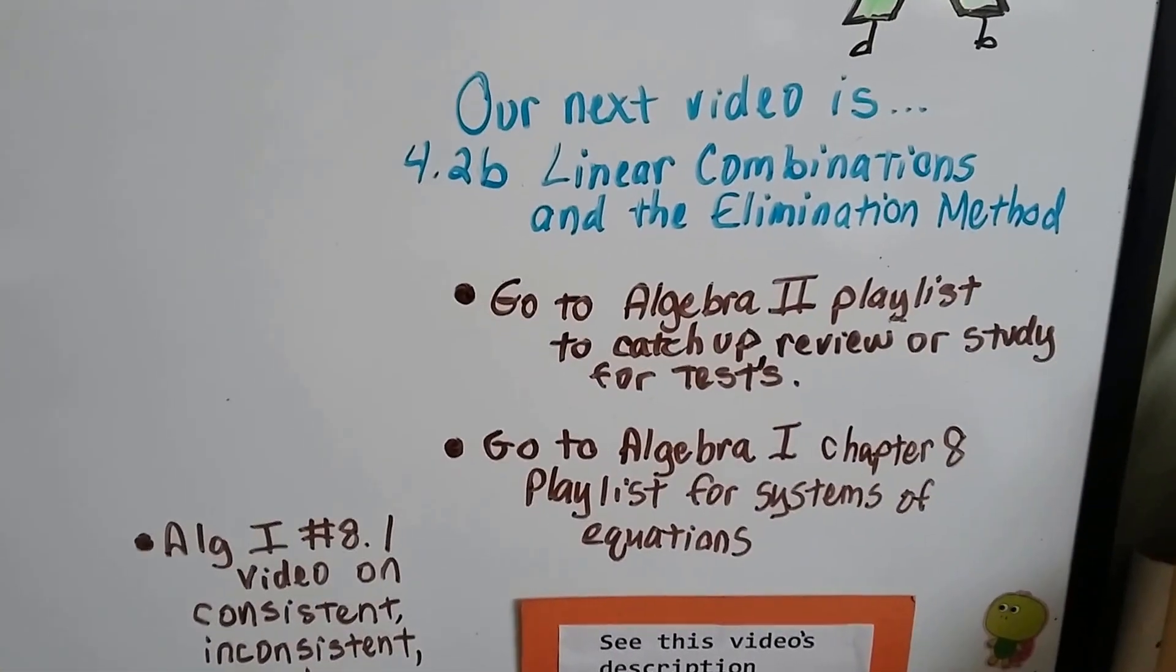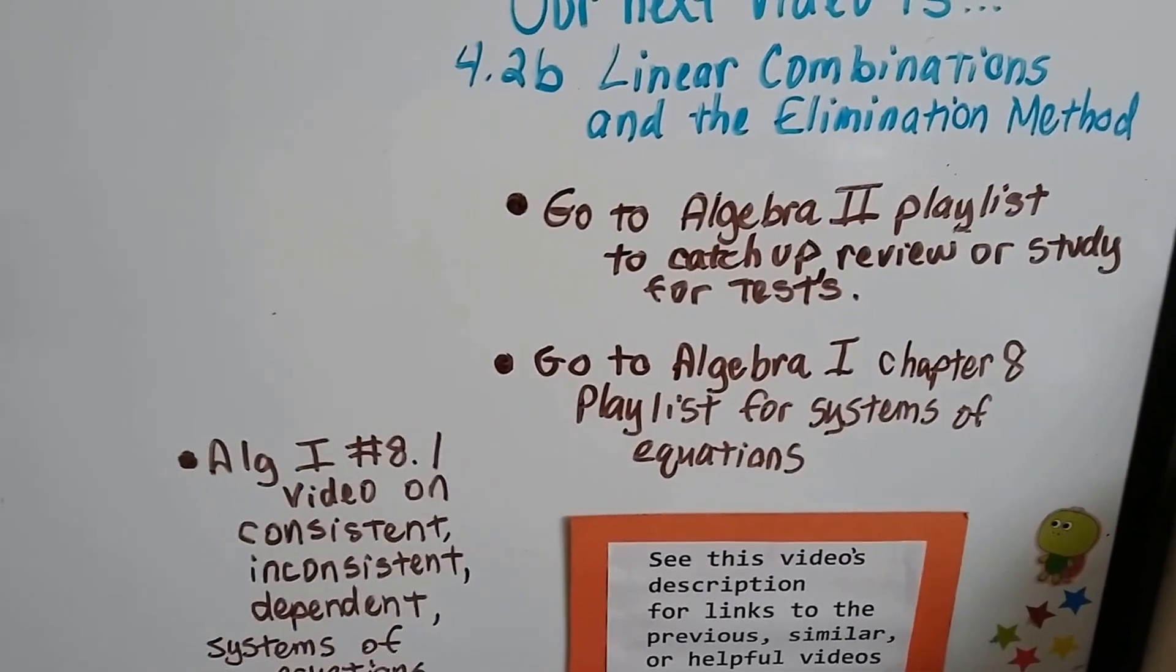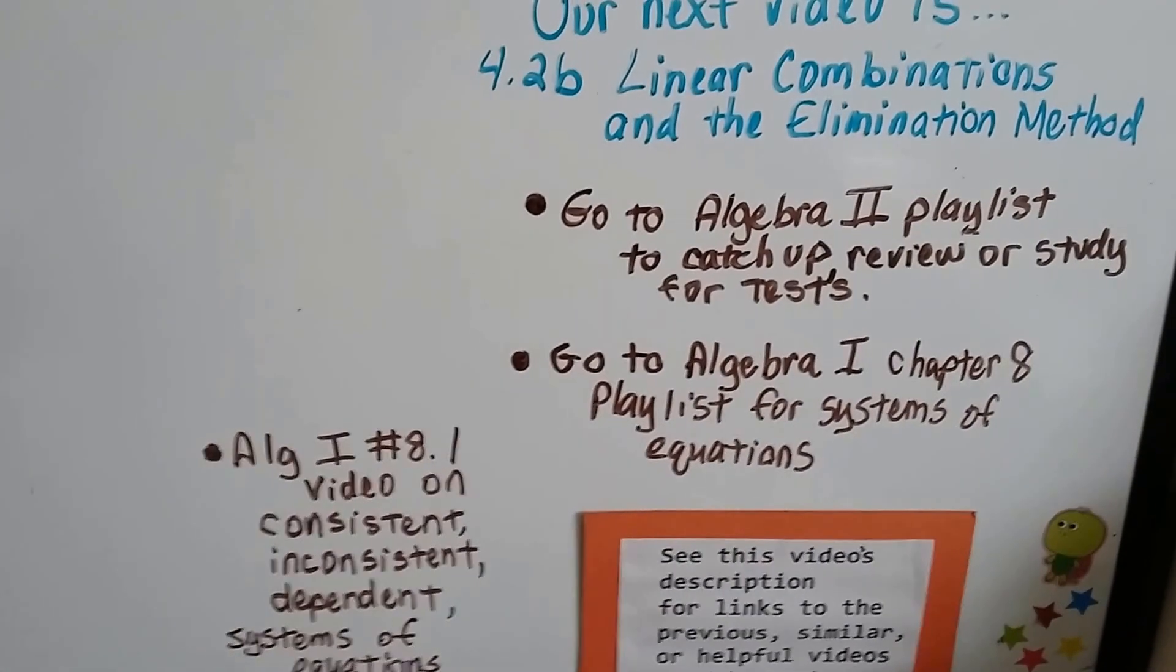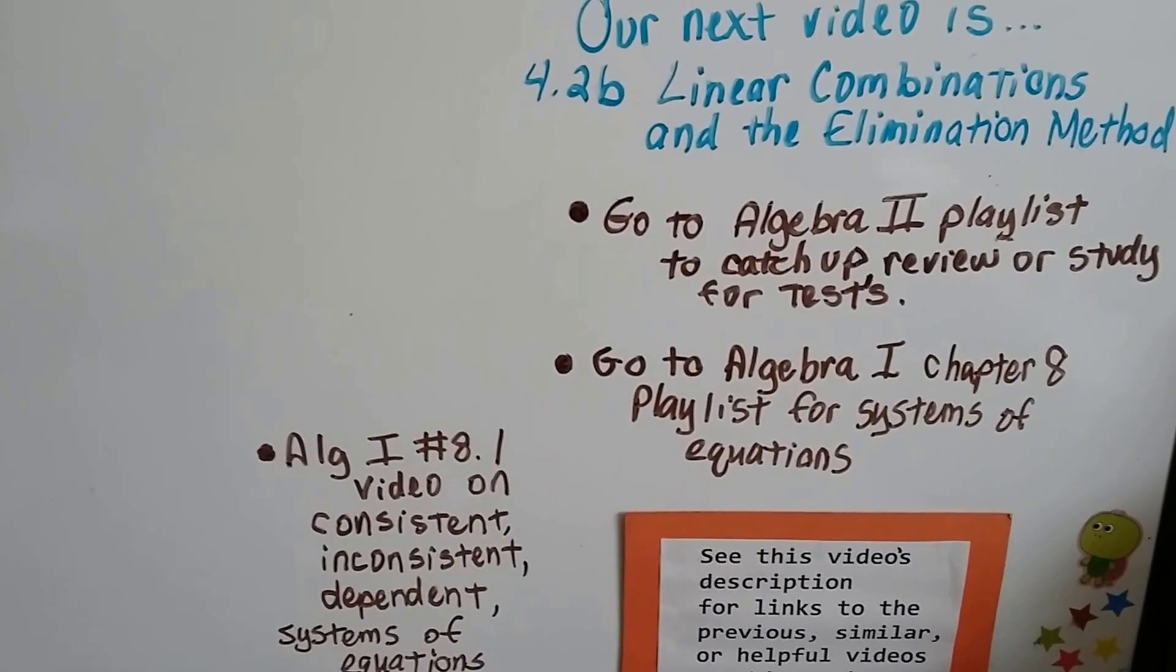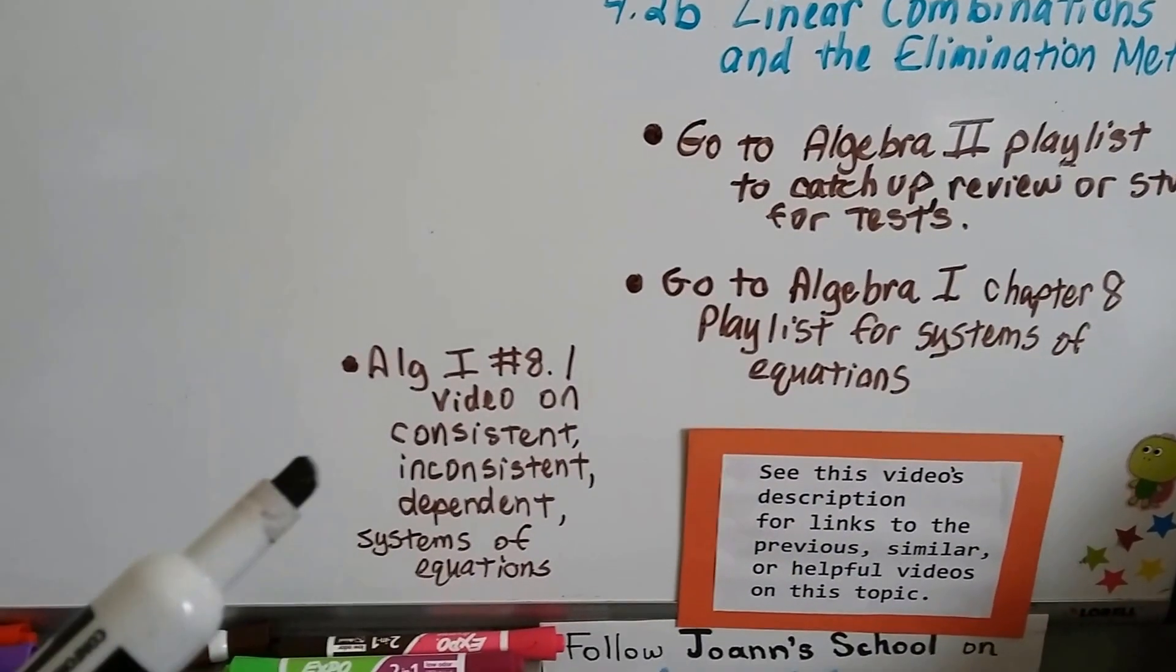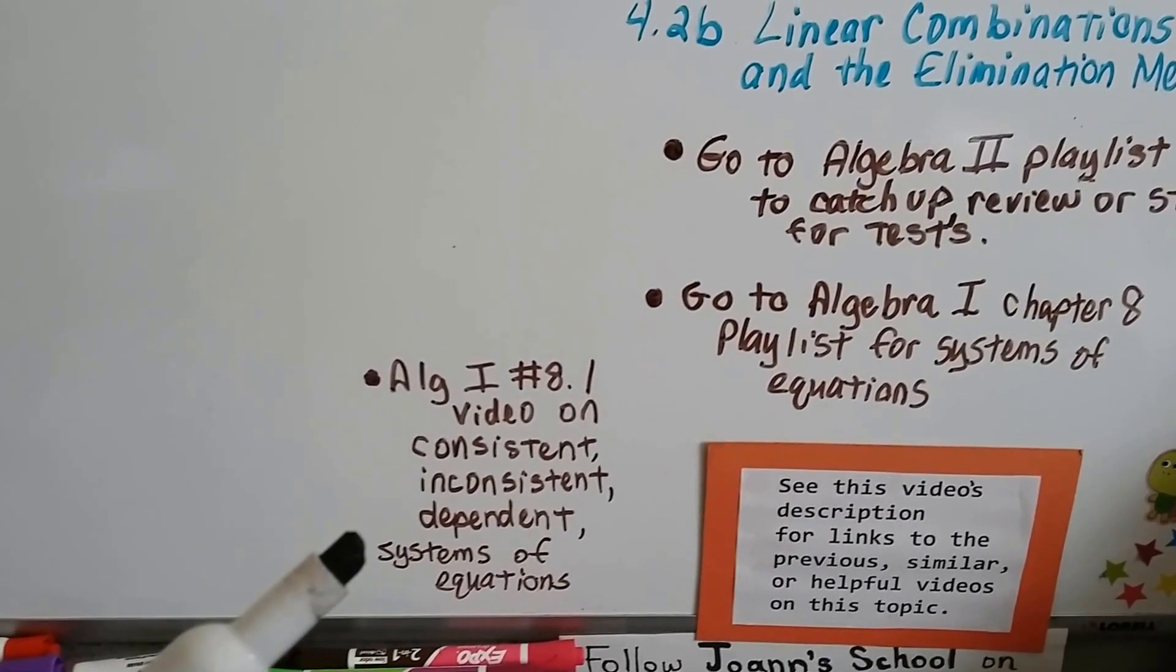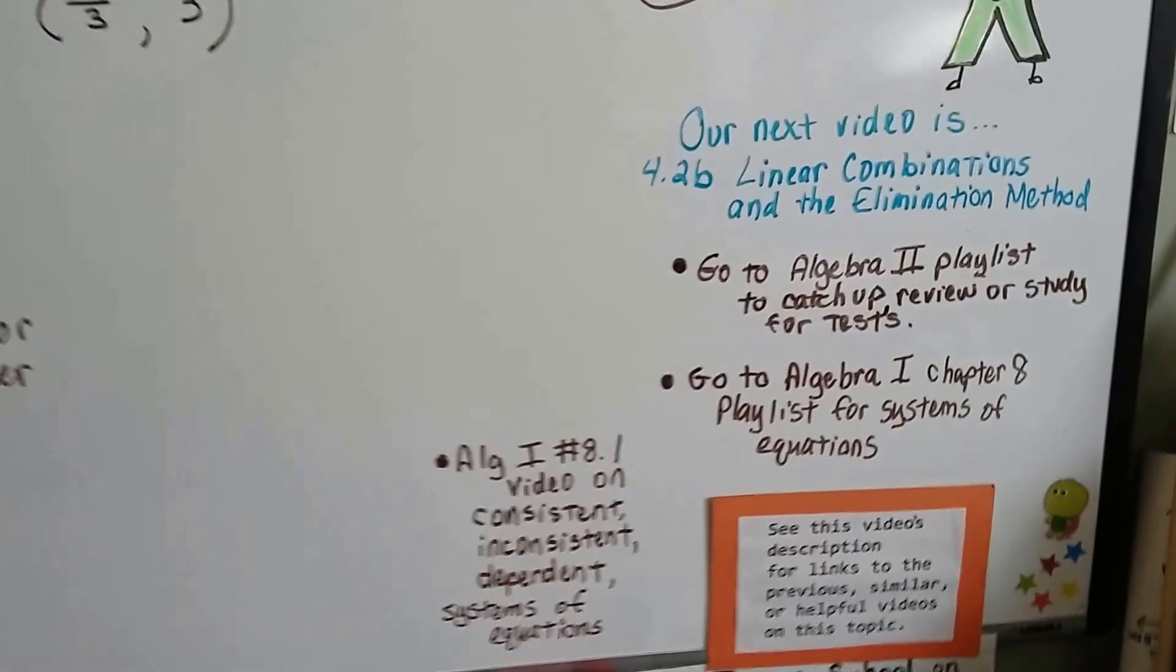Our next video is 4.2b. We're going to talk about linear combinations and the elimination method. And this video's description has links to the Algebra 2 playlist. I'm going to add this video to it right now so you can use it to catch up on any videos you haven't seen or review for tests if you need to. There's going to be a link to the Algebra 1 Chapter 8 playlist for systems of equations. There's going to be a link to 8.1 from Algebra 1 for consistent, inconsistent, dependent systems of equations in case you've forgotten that from last year. You want to keep up with that.